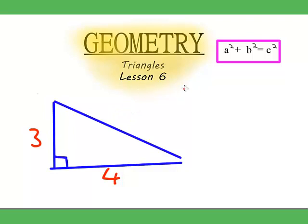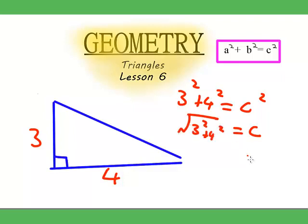Well, since this is A and this is B, so that will mean 3 squared plus 4 squared is equal to C squared. So, C is equal to the square root of 3 squared plus 4 squared, which means C equals 5.